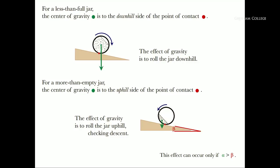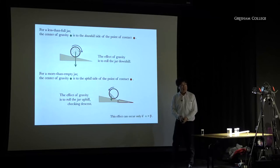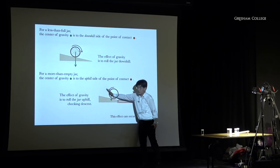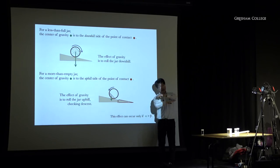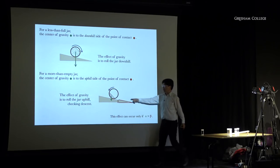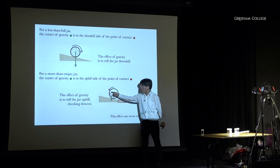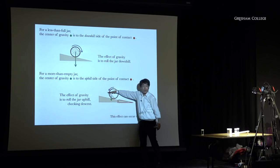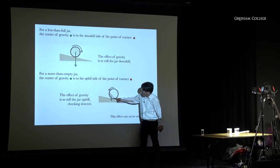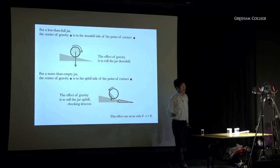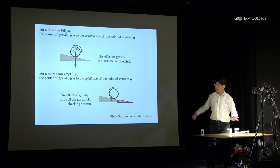This effect can only happen if the angle of repose alpha is larger — steeper — than the inclination beta of the plane. For fluid, alpha is always zero, so you can never have this effect. This is a digression, but it's very interesting to do this with a jar half-full of honey. I found that instead of rolling slowly, there is intermittent motion: it stops, then suddenly rolls a bit, stops again, then at some random time goes again. Very strange intermittent motion from a continuous fluid.